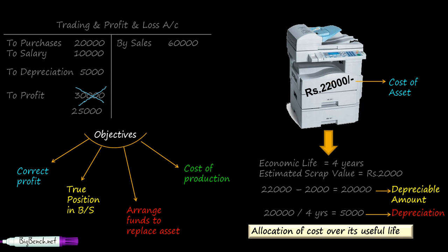Next objective: cost of production. The depreciation on the machine will be debited to the manufacturing account if you are preparing one, and therefore it helps us calculate the cost of production correctly. So the objectives of depreciation are: it helps calculate correct profit, shows true position in the balance sheet, arranges funds to replace the asset — which is one of the most important points — and helps calculate correct cost of production.